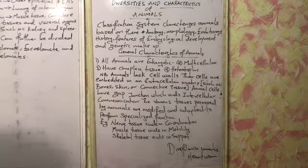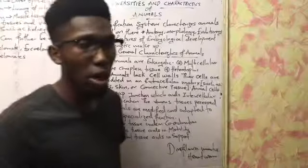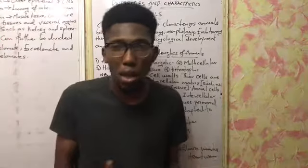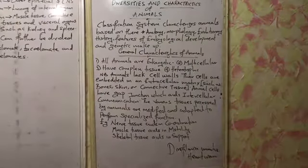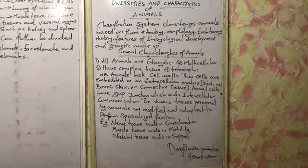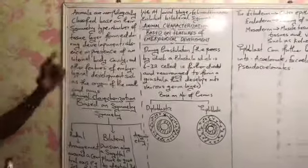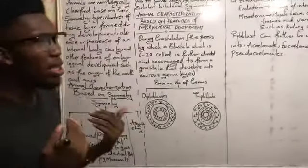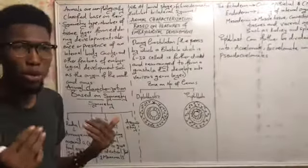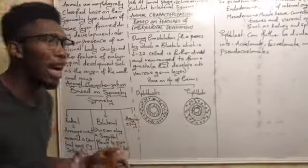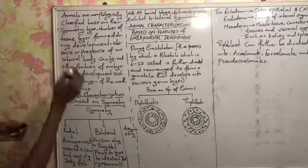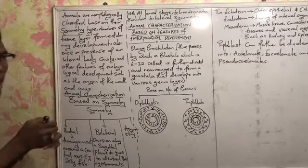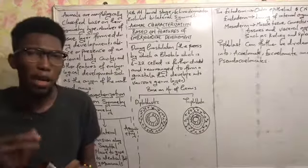So we've been able to brush through some characteristics of animals. Now, animals are morphologically classified based on symmetry type. Looking at the basis of classification of animals — animals are morphologically classified on the basis of symmetry type. The symmetry type refers to the type of symmetry exhibited by that animal. Symmetry is the balance axis of the body of the organism.